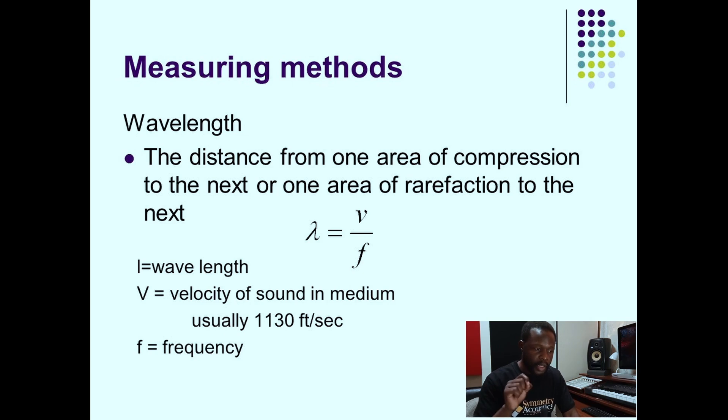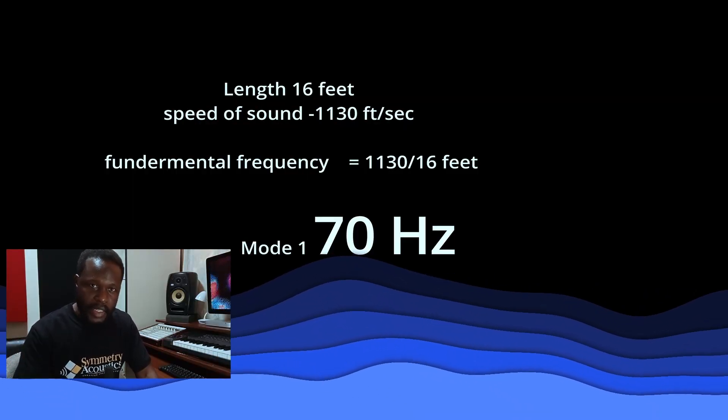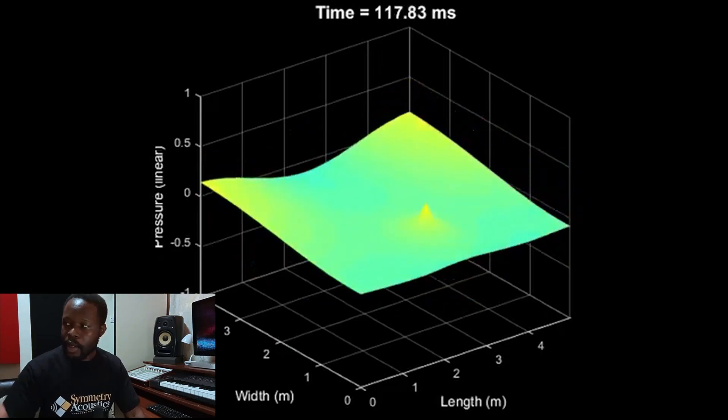For instance, take a room of 16 feet, which is a standard bedroom studio — let's take 16 feet as the extreme. To find the frequency causing a problem along that dimension — the room modes between the speakers and the rear wall, which is the longest dimension — we use this formula: take the speed of sound, which in feet is 1130 feet per second, and divide it by the dimension, in this case 16. What we get is the fundamental frequency causing the problem in that section.